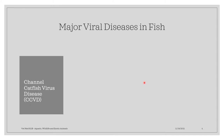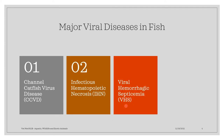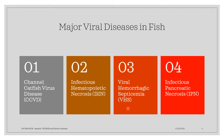These are the major viral diseases of fish. Number one is the channel catfish virus disease, or CCVD. We also have the infectious hematopoietic necrosis, or IHN. We also have the viral hemorrhagic septicemia, or VHS, and the infectious pancreatic necrosis, or IPN.